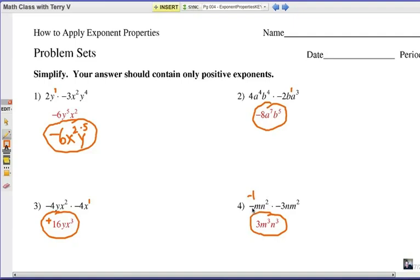And number four, if it's just a negative sign in front of a variable, make sure you remember that's a negative one. So it's really negative one times negative three, positive three. And m to the first times m squared, m to the third. N squared times a single n there is also n to the third. So there's your final answer.